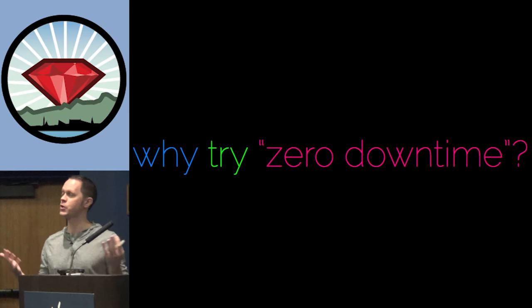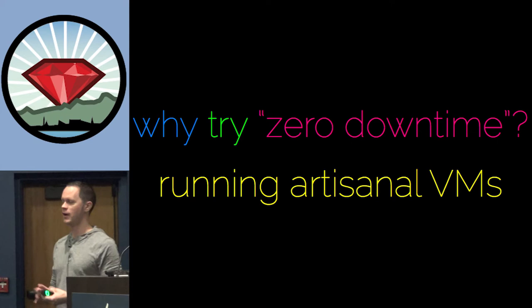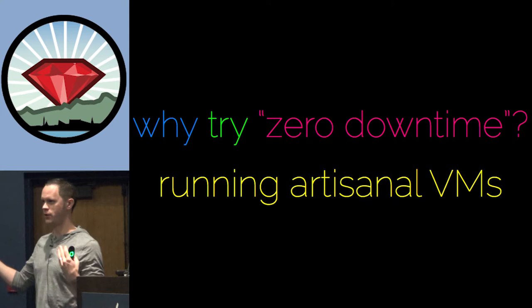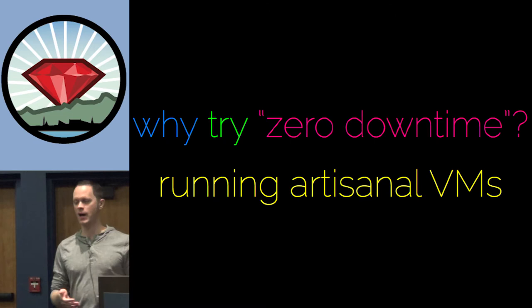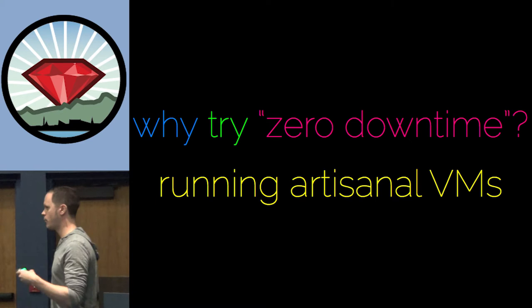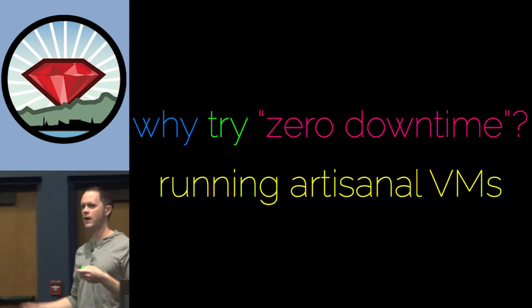It actually has practical benefits other than just being something that GitHub does — it's a really great way to achieve zero downtime. Why try zero downtime in the first place? You may be running your Amazon EC2 instances which may not have a lot of computing power. When your app starts, maybe your Rails app takes 30 seconds to boot. If you're restarting the app and you have that 30 seconds of downtime, it really limits how much downtime you can afford if you're trying to achieve a certain level of uptime within a year.